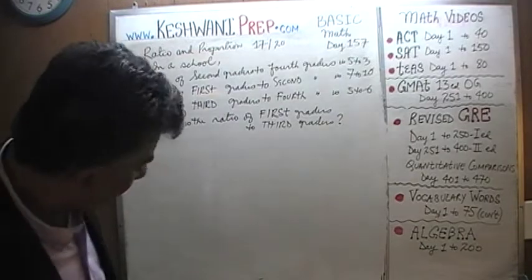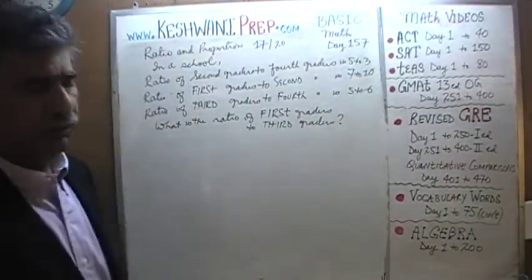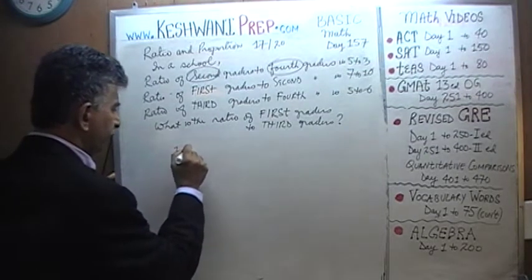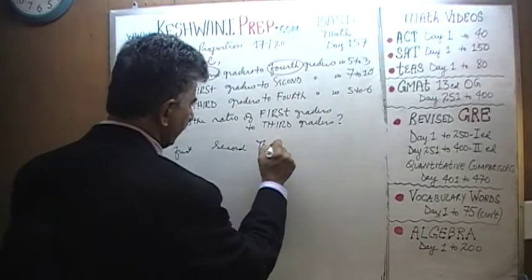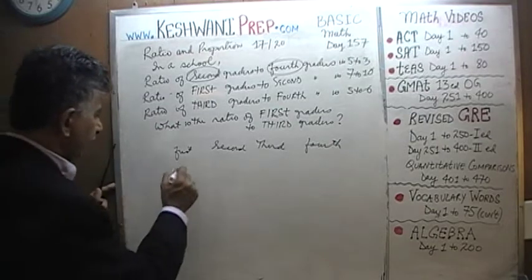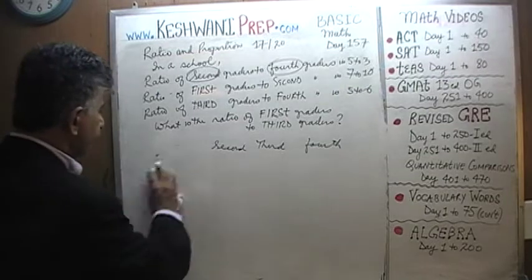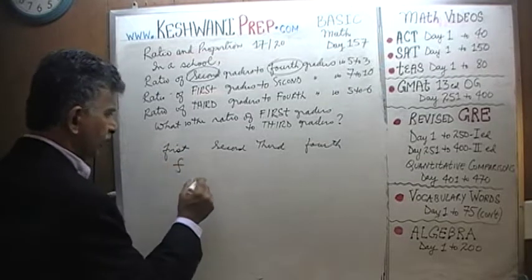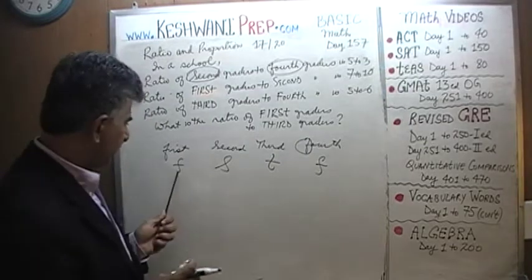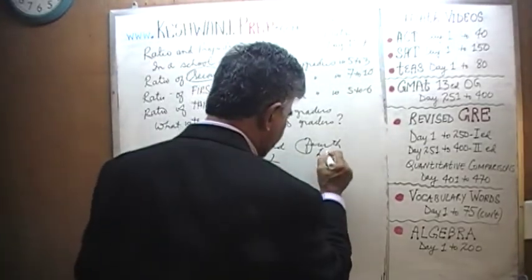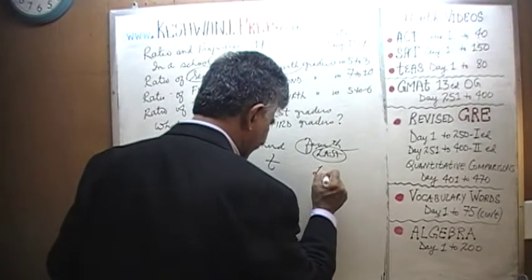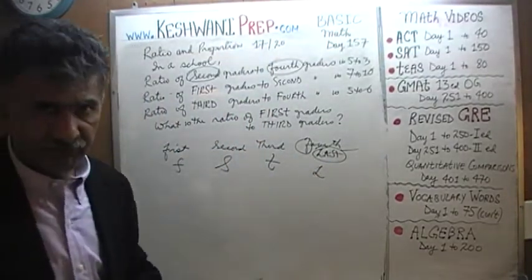The very first thing we need to do is make up symbols for these grades. We have 1st grader, 2nd grader, 3rd grader, and 4th grader. Let's call the 1st grader F. The 2nd grader S, the 3rd grader T, and the 4th grader — we can't call it F since that's taken — so we'll call it L, because it's the last grade in elementary school before they move on to middle school.